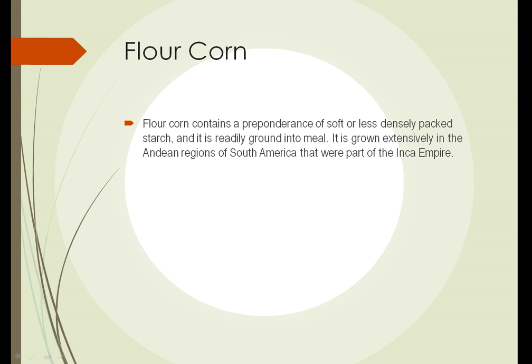Flour corn is the third type of corn, and it has softer or less densely packed starch, so it's very easy to grind into meal. It was grown, and still is, pretty extensively in the mountainous regions of South America that were part of the Inca Empire. Most of the grinding of corn to flour or meal was done by hand, so it was important to have a corn where that process was easier — and flour corn is that kind of corn.